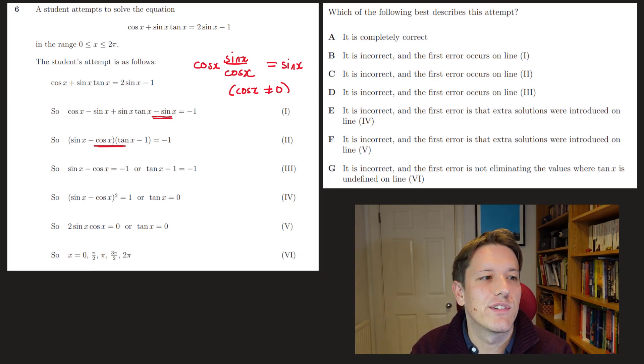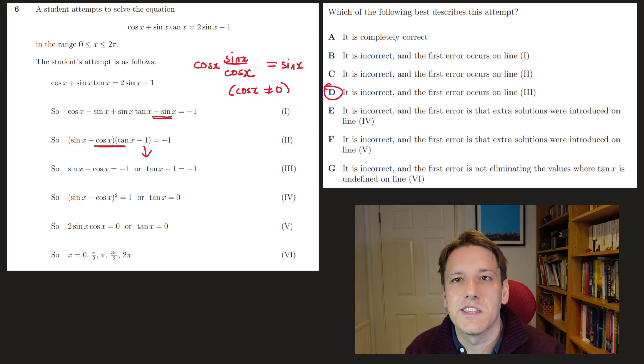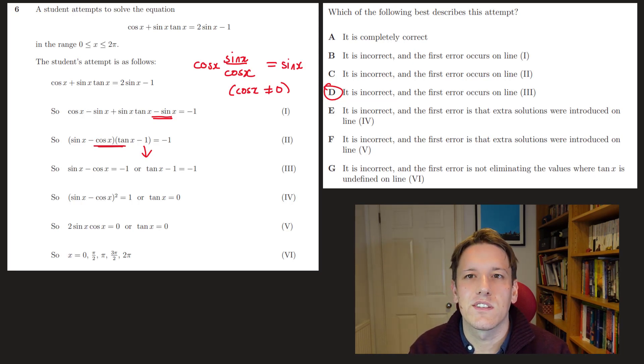But we do get a pretty glaring error from 2 to 3, because it's definitely not the case that when the product of 2 factors is minus 1, that means 1 of the 2 values has to be minus 1. This is an argument that only works when you've got 0 on the right-hand side. If they're going to try a factoring argument here, they need to first set everything equal to 0. That means we don't have to bother reading the rest of the question. There's an absolutely glaring error on line 3.